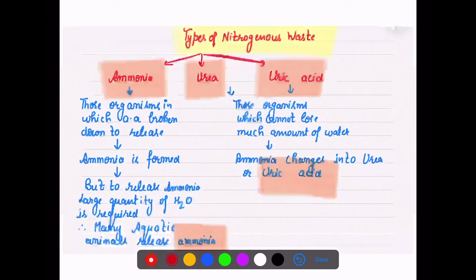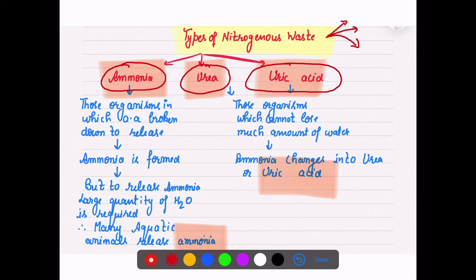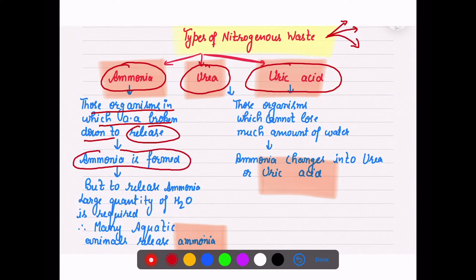The types of nitrogenous waste — the nitrogen waste can be of three types: ammonia, urea, and uric acid. This nitrogenous waste is excreted out from our body in different organisms. Those organisms in which amino acids are broken down and the unneeded amino acids have to be released will form ammonia at that time.